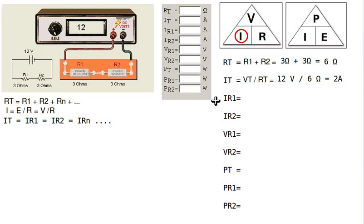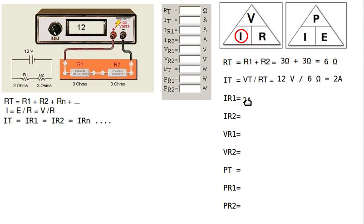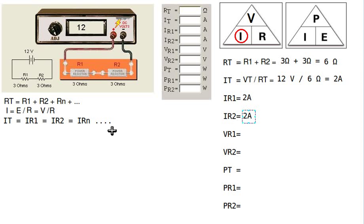Since this is a series circuit, we don't need to recalculate the currents for the individual resistors. We don't have enough information to do so anyway at this point, because we would need to know the voltages across each individual resistance. But we know that in a series circuit the currents are the same, so we don't need to recalculate them.